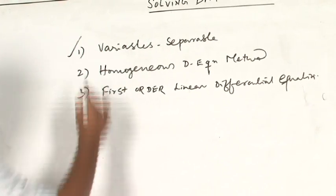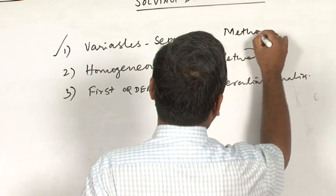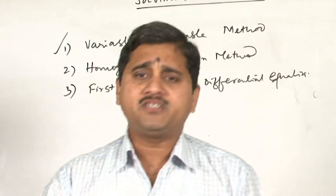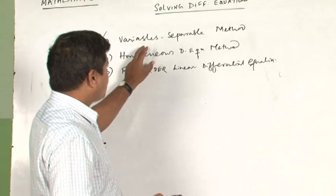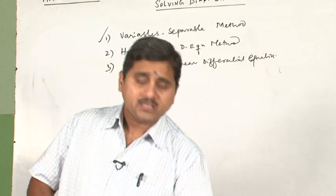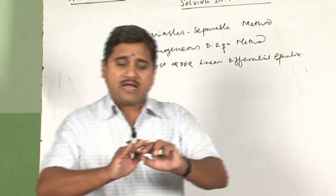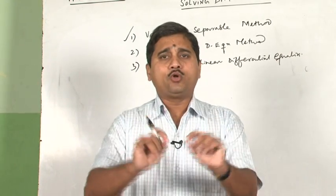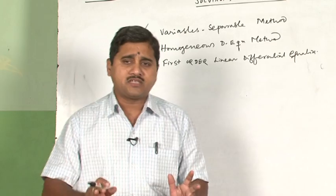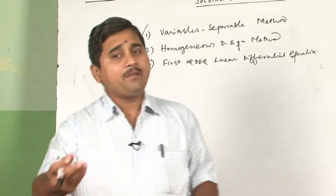Let me begin with the variable separable method. You can understand from the very title — variables separable — it means you will be given a differential equation and you will have to separate the x and dx terms from the y and dy terms, provided they are separable. After having separated both, you will go for direct complete integration to arrive at the general solution, and then after applying the initial value conditions given, you will get the particular solution.